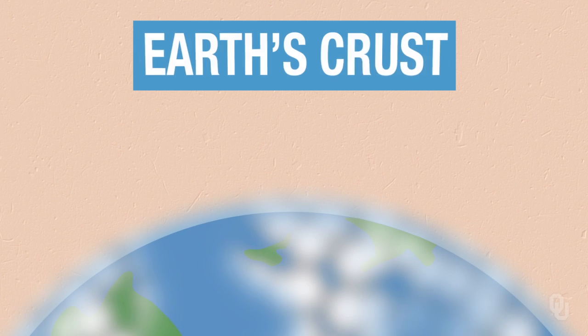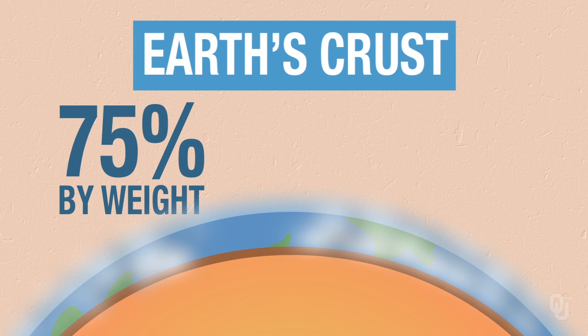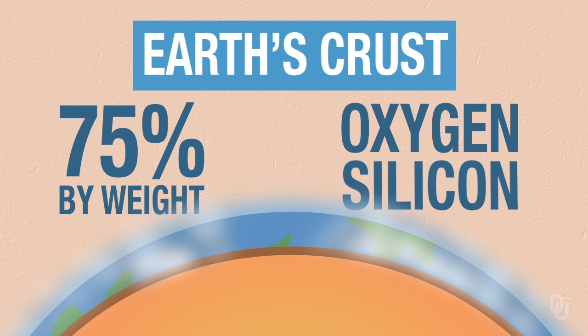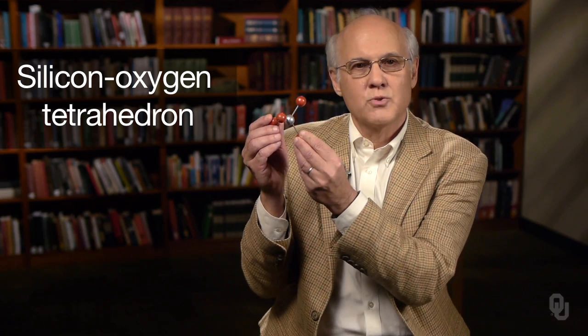The earth's crust is 75% by weight two elements: oxygen and silicon. Because the silicon to oxygen size ratio is 0.3, what forms is what's called the silicon oxygen tetrahedron. It has a silicon in the center surrounded by four oxygens. Think of it as a pyramid, with the oxygens at the apexes of each of the points.